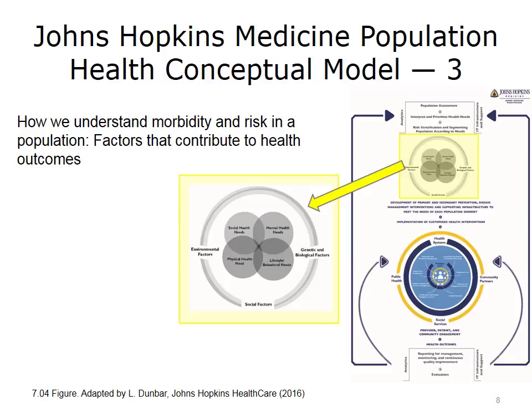Below the population assessment box in the conceptual model are the upstream factors and individual factors that affect the ability of a population to realize better health and better quality of life. These factors inform the development of primary strategies and interventions for the population. In developing these strategies, it's necessary to consider the social needs, mental health needs, physical needs, and lifestyle and behavioral needs of the population, as well as the environmental factors, social factors, and genetic and biologic factors, which can profoundly influence disease and injury within a population.